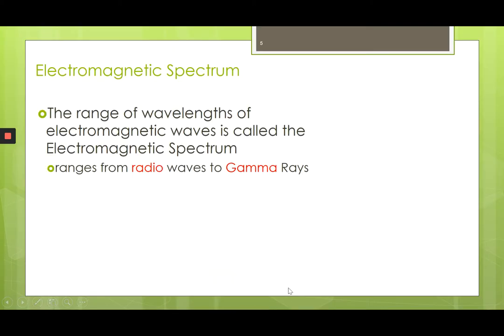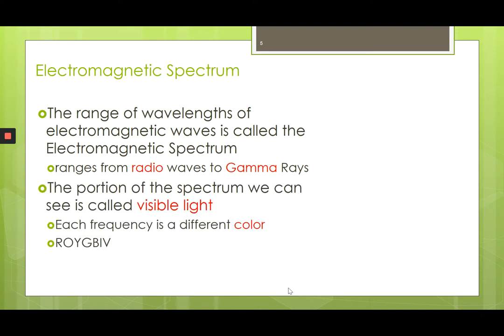So we have what is called an electromagnetic spectrum, and there's a range of wavelengths included in it — a lot of which we cannot actually see. This ranges from radio waves all the way to gamma. Radio waves have a very long wavelength and, as a result, a very low frequency. Gamma rays have a very short wavelength and a very high frequency.